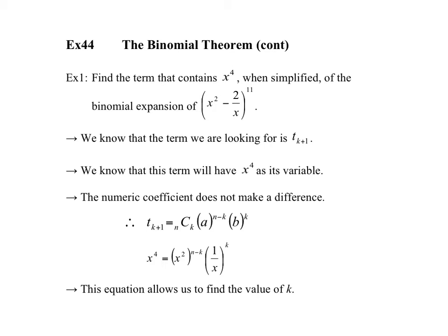Hi students, welcome to your last video lesson for grade 12 pre-cal, exercise 44, the binomial theorem, continued. Example 1: Find a term that contains x to the power 4, when simplified, of the binomial expansion x squared minus 2 over x, to the power 11.